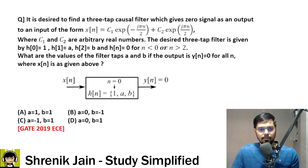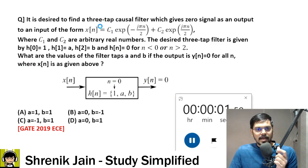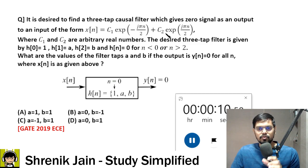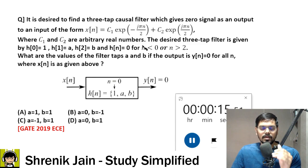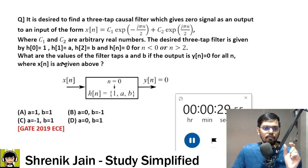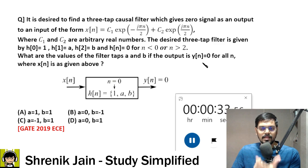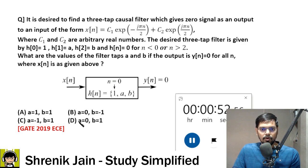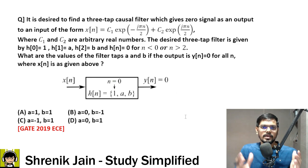Moving to the next question — not all questions are this easy. Gate 2009 Telecommunication: it is desired to find a three-tap causal filter giving zero output for input X(N) = C1·e^(−jπN/2) + C2·e^(jπN/2), where C1 and C2 are arbitrary real numbers. The filter is defined by H(0)=1, H(1)=A, H(2)=B, and H(N)=0 elsewhere. Find A and B such that Y(N)=0 for all N.